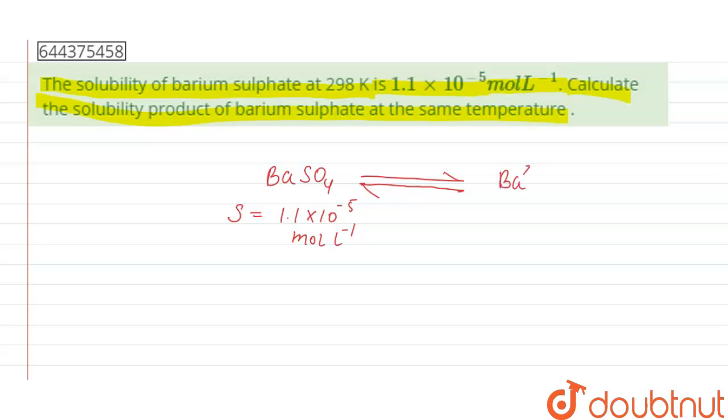Ba^2+ plus SO4^2- ions. Now the molar solubility of barium 2 plus also becomes S, and for SO4^2- it is also S.